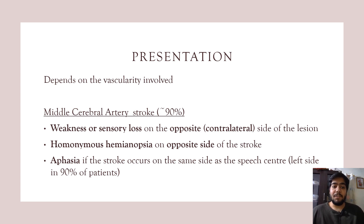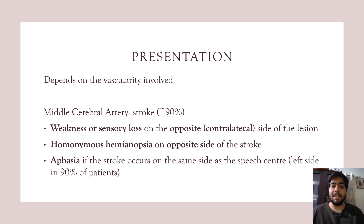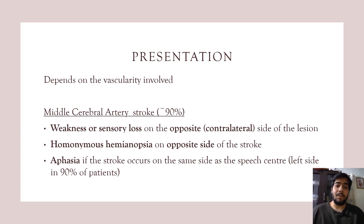The presentation of a stroke depends on the vasculature involved. Middle cerebral artery stroke is the most common, accounting for about 90% of strokes. It causes weakness or sensory loss on the contralateral side of the lesion, homonymous hemianopia on the opposite side, and aphasia if the stroke occurs on the same side as the speech center — which is the left side in 90% of patients.